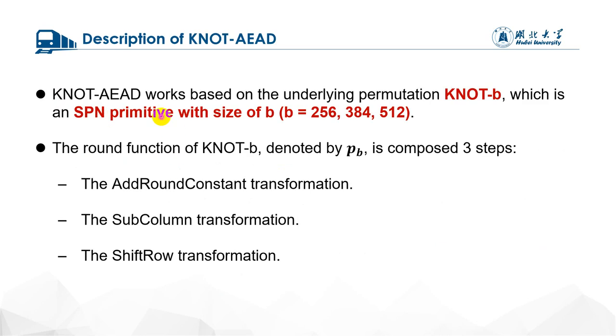Now we give a brief description of AEAD. KNOT-AEAD works based on the underlying permutation called KNOT-b. It is an SPN primitive with the b-bit state. Each round function is denoted by Pb and composed of three steps. The first step is to XOR a constant to the internal state, we call it round constant transformation. Then the second step is the nonlinear step by applying the four-bit S-boxes, we call it sub-column transformation. The last step is the linear step by left rotations, we call it the shift-row transformation.